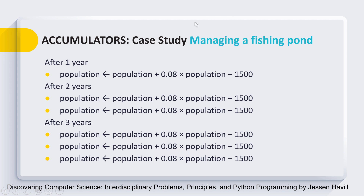Please consider this as an assignment. Frame a for loop that finds the population for 25 years and produces a table showing the population after each year. Take your time to solve this problem. I will see you in the next session with the solution. Please try to solve it on your own first and then compare your solution with the one discussed in the next video session. Thank you, see you next session, bye bye.